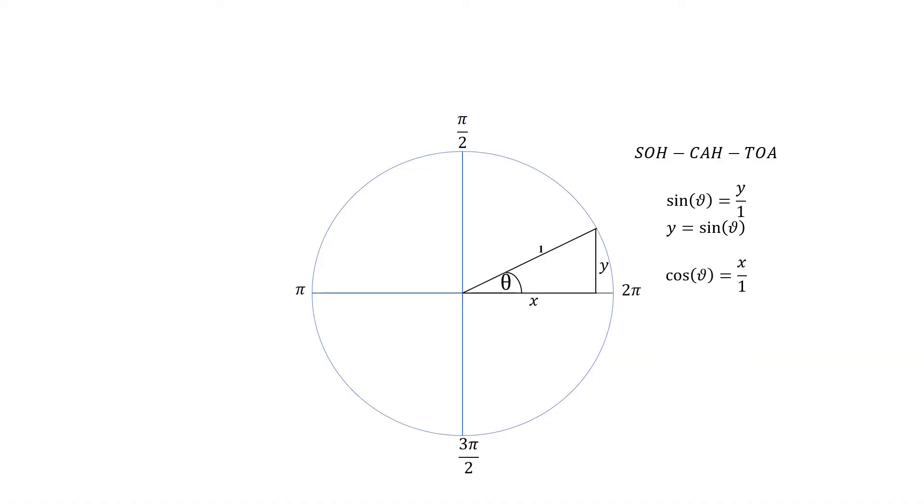Next, we take cos of theta and that's going to be adjacent on hypotenuse, so that's going to be x on 1. And once again, we can rearrange that so that x is equal to cos of theta. So this is basically why when we talk about the unit circle, our horizontal value is cos of theta and our vertical is sine of theta.